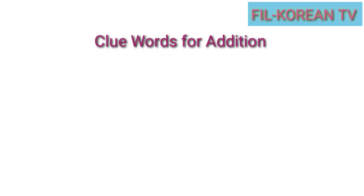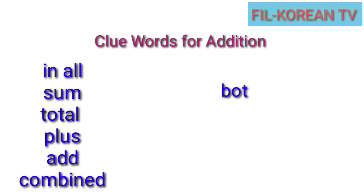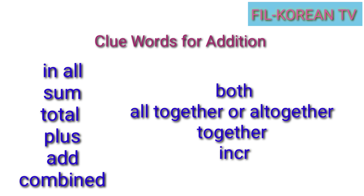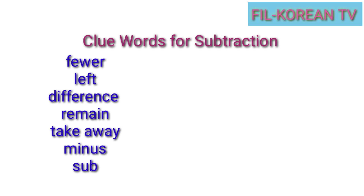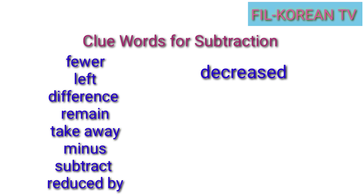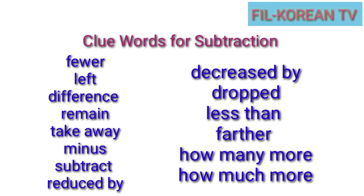In solving word problems, it is important that you can determine the word clues so that you know what operation to use. Here are some clue words for addition: in all, sum, total, plus, add, combined, both, all together, together, increased by. For subtraction, here are some clue words: fewer, left, difference, remain, take away, minus, subtract, reduced by, decreased by, dropped, less than, farther, how many more, or how much more. Remember these words so you can identify the operation needed.